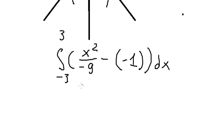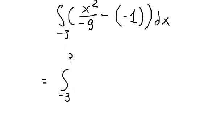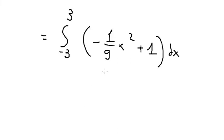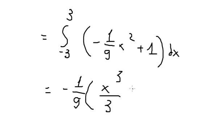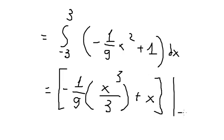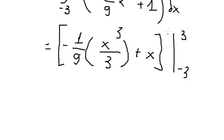Now we need to evaluate this integral. We have negative one over nine times x squared — negative with negative gives us positive one. The integral of x squared is x to the power of three over three. The integral of one is x. We evaluate with the bounds from negative three to positive three — substituting three and negative three to get the final answer.